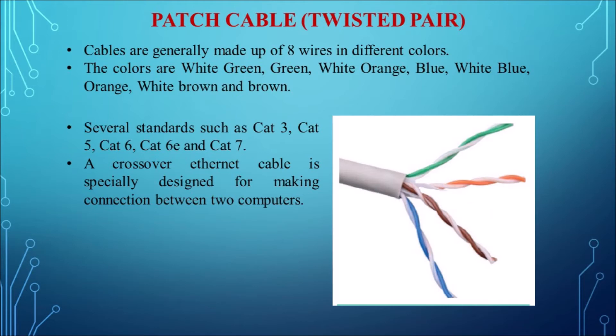Ethernet cables are manufactured in several industrial standards: CAT 3, CAT 5, CAT 6, CAT 6e, and CAT 7. 'CAT' stands for Category, and the number indicates the version. The latest version denotes a faster and higher frequency measured in megahertz. Increasing the size of the cable can lead to slower transmission speed, so usage must be optimized with the accurate distance for the exact devices.